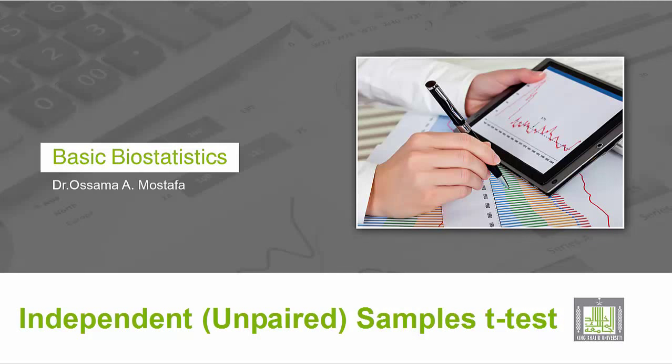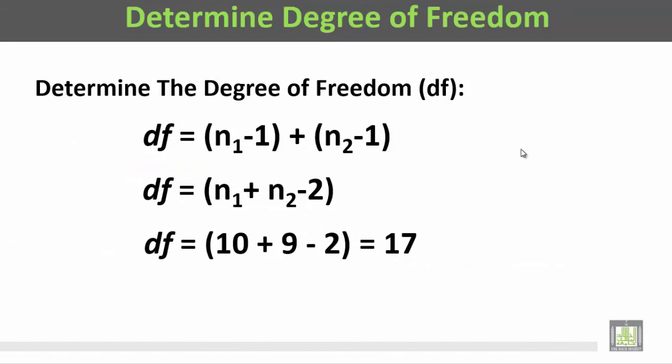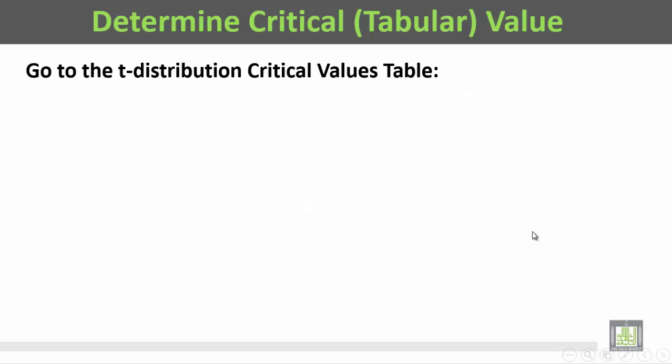Now let us determine the degree of freedom for the t-test. The degree of freedom is equal to (n1-1) plus (n2-1), or n1 plus n2 minus 2. In this example, it will be 10 plus 9 minus 2, which equals 17. Now we will determine the critical or tabular value. We go to the t-distribution critical values table.